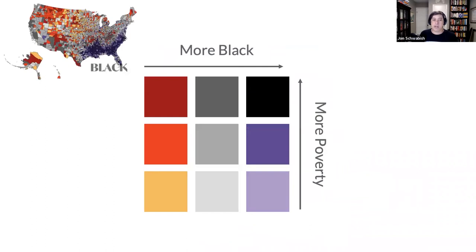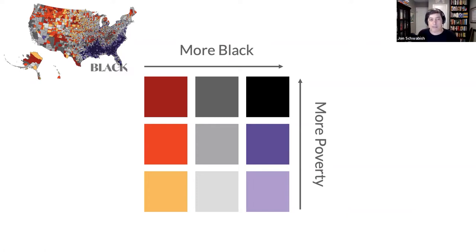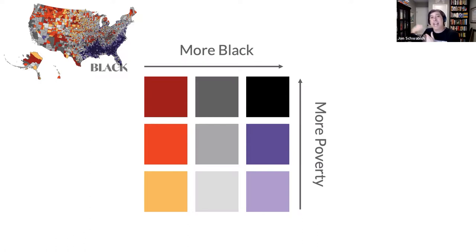On one dimension of this bivariate choropleth map is the poverty rate, from low to high. On the other dimension — along the horizontal axis — is the density of people who identify as Black or African-American. In areas with a lower density of Black residents and a lower poverty rate, we see a yellowish-peach color in the middle part of the country. Counties with a higher poverty rate and higher density of Black or African-American residents appear in a very dark purple, almost black color — concentrated in the southeastern United States.